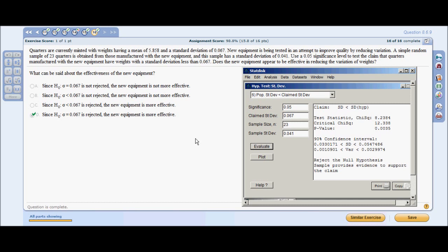Your chi square and all that is irrelevant here. All you're worried about is if you're going to reject your null hypothesis. And here you have in your answer, since H0 is 0.067, you are rejecting it. And that concludes this tutorial for the Chapter 8 homework.